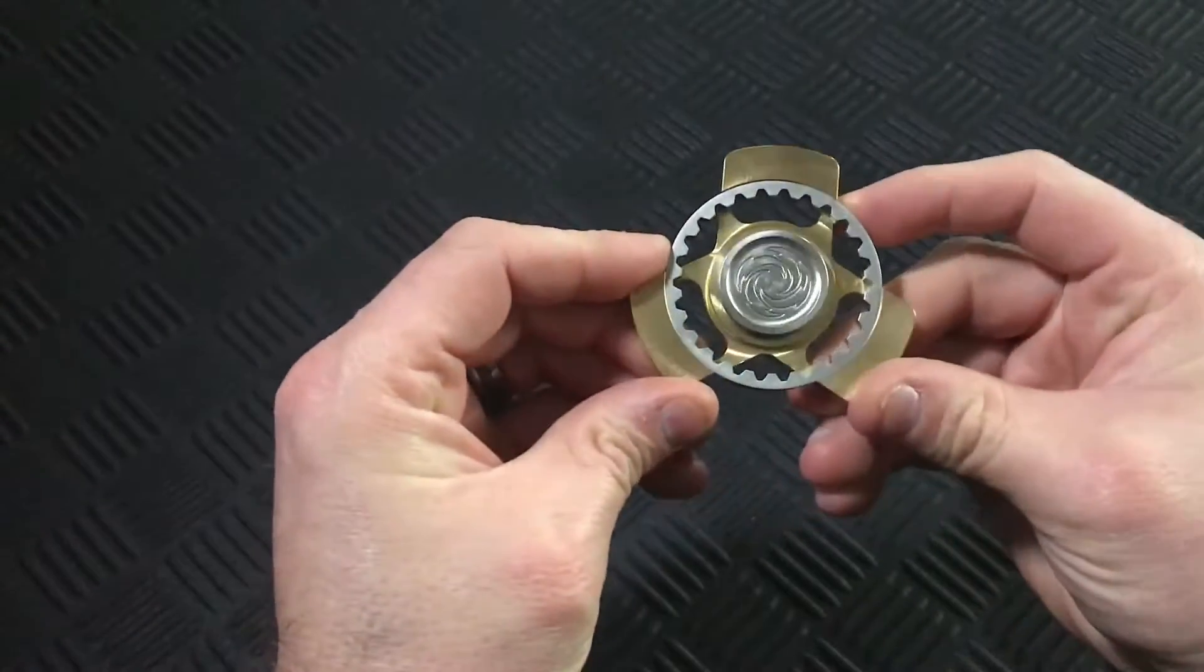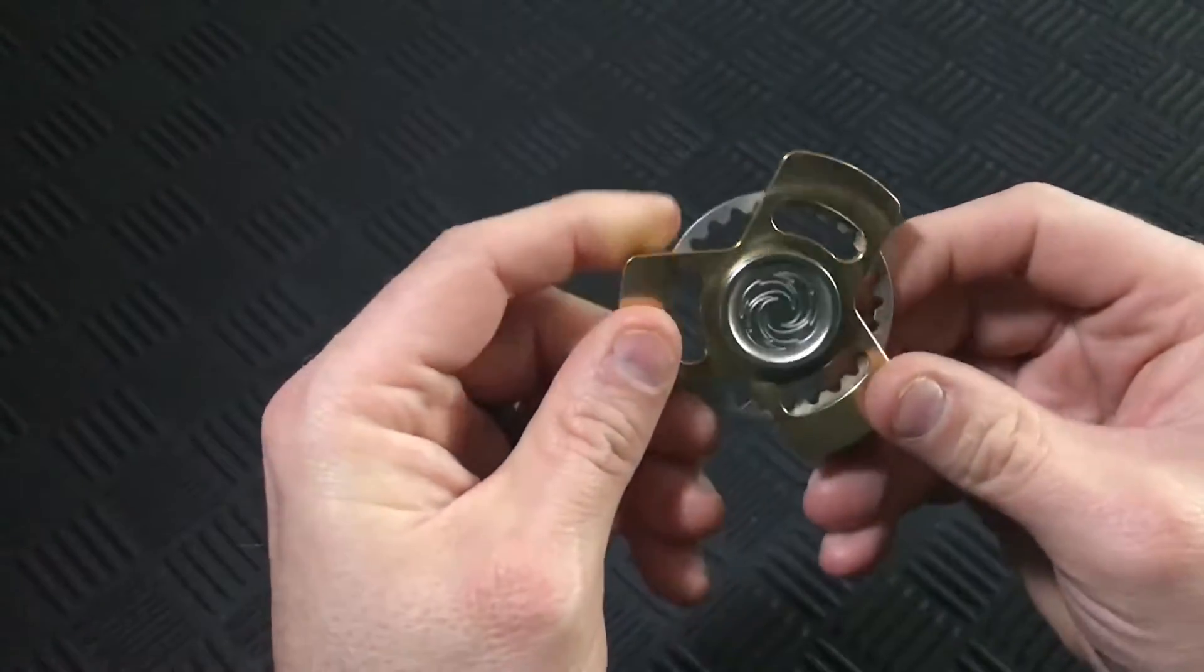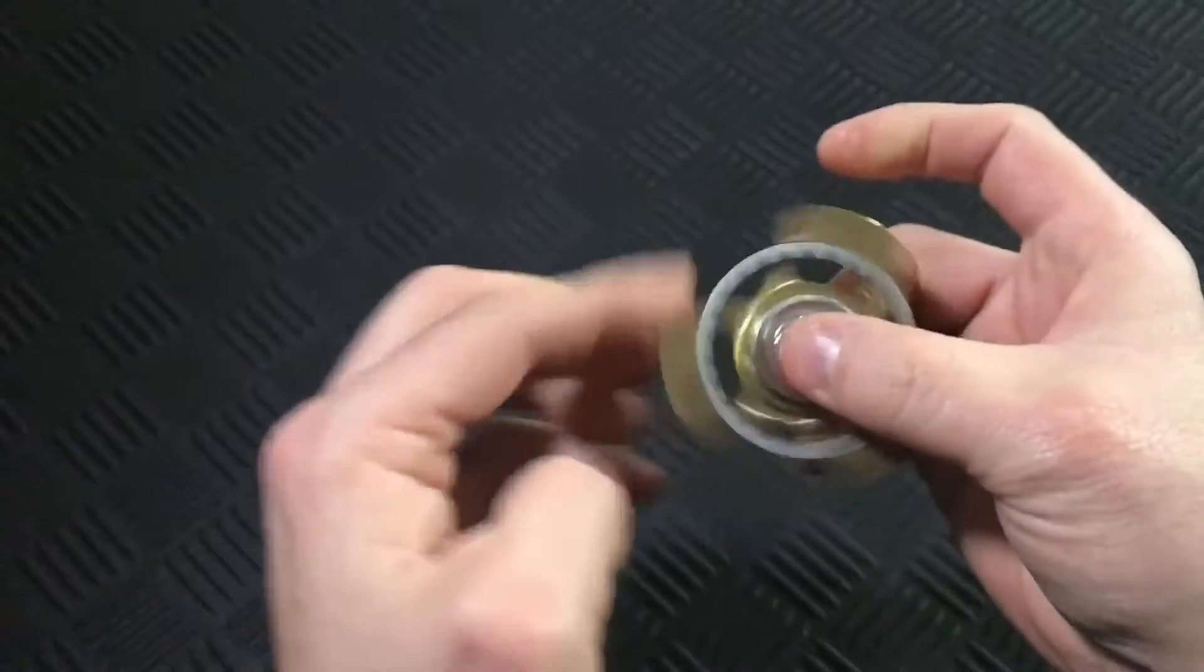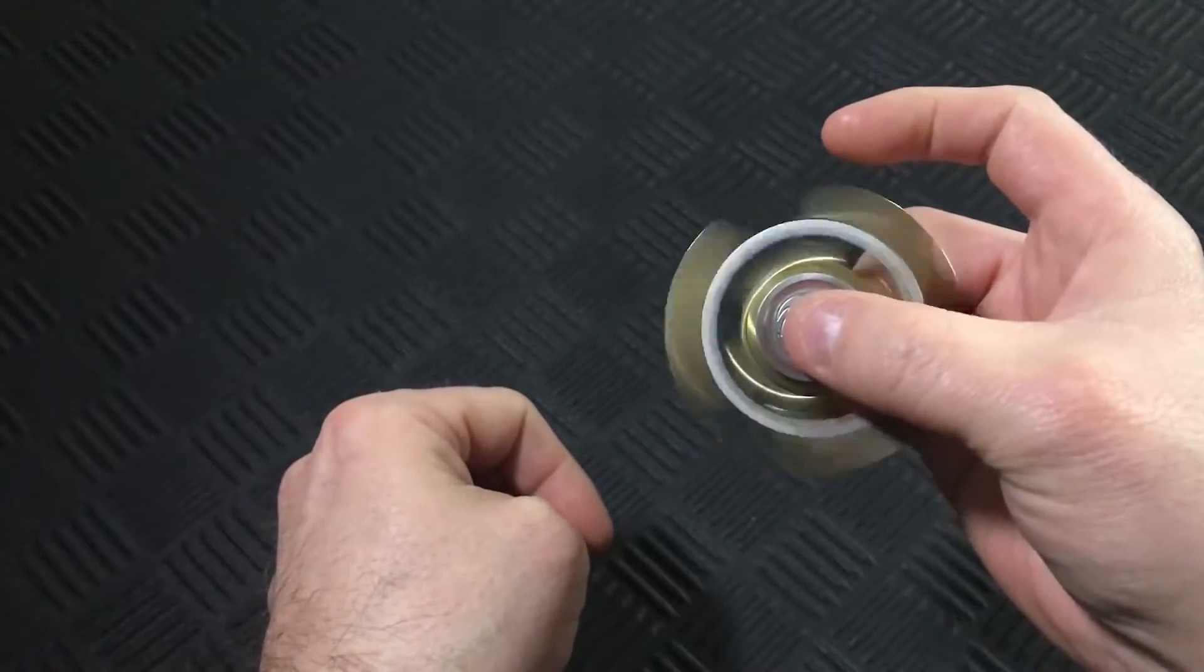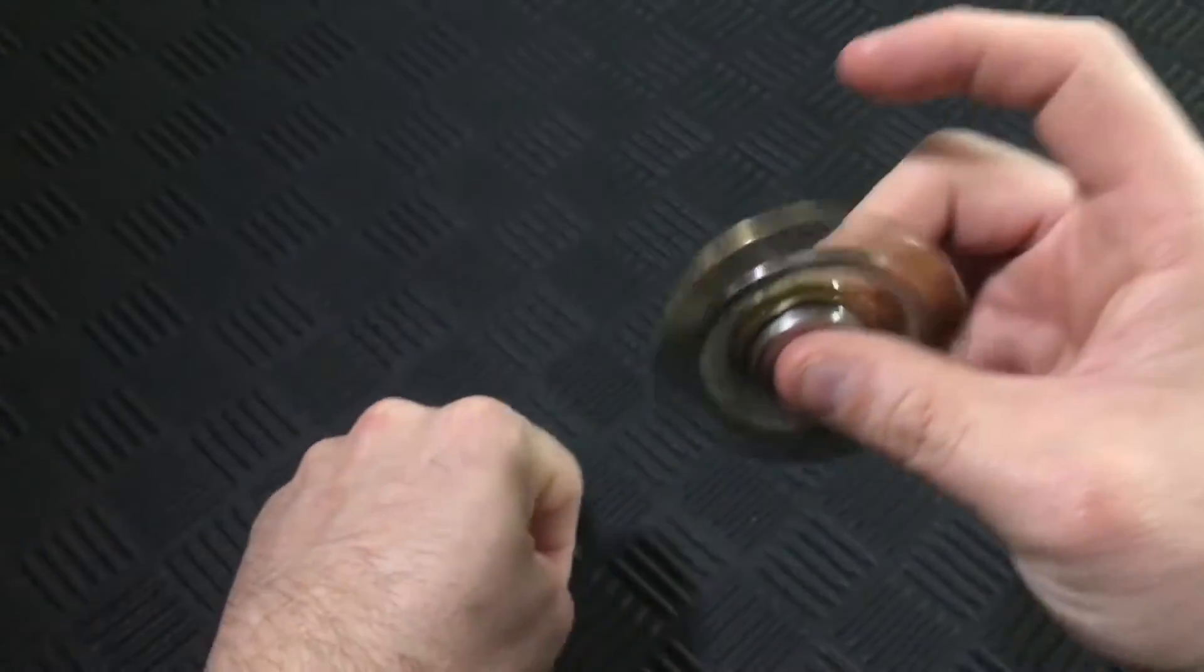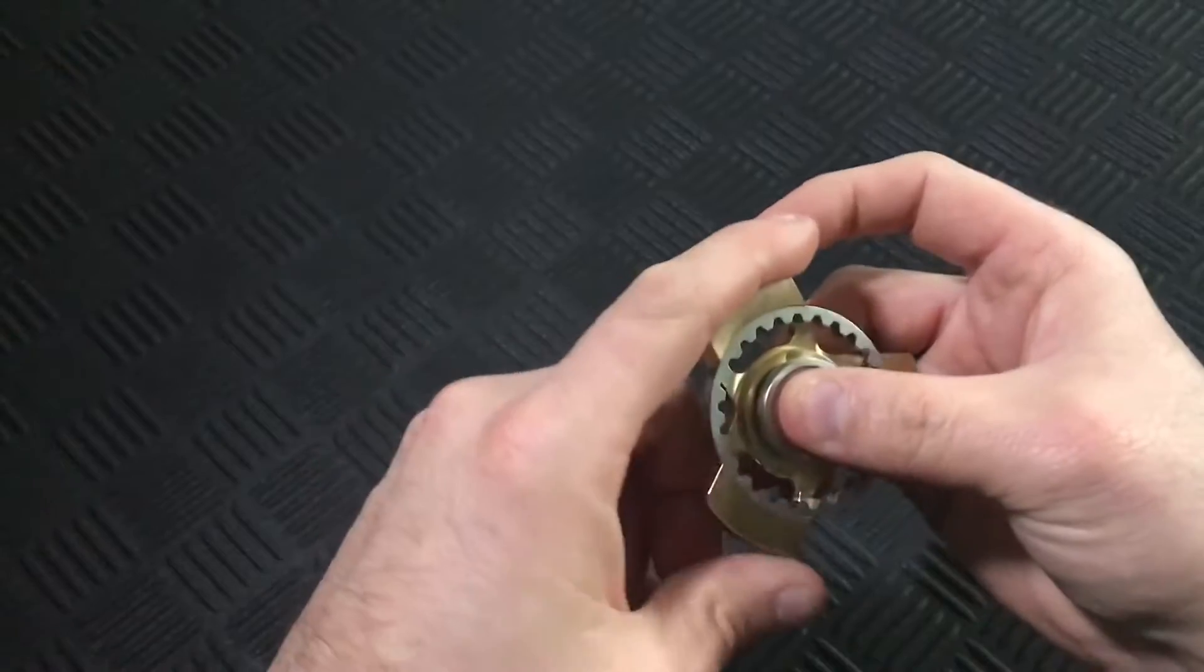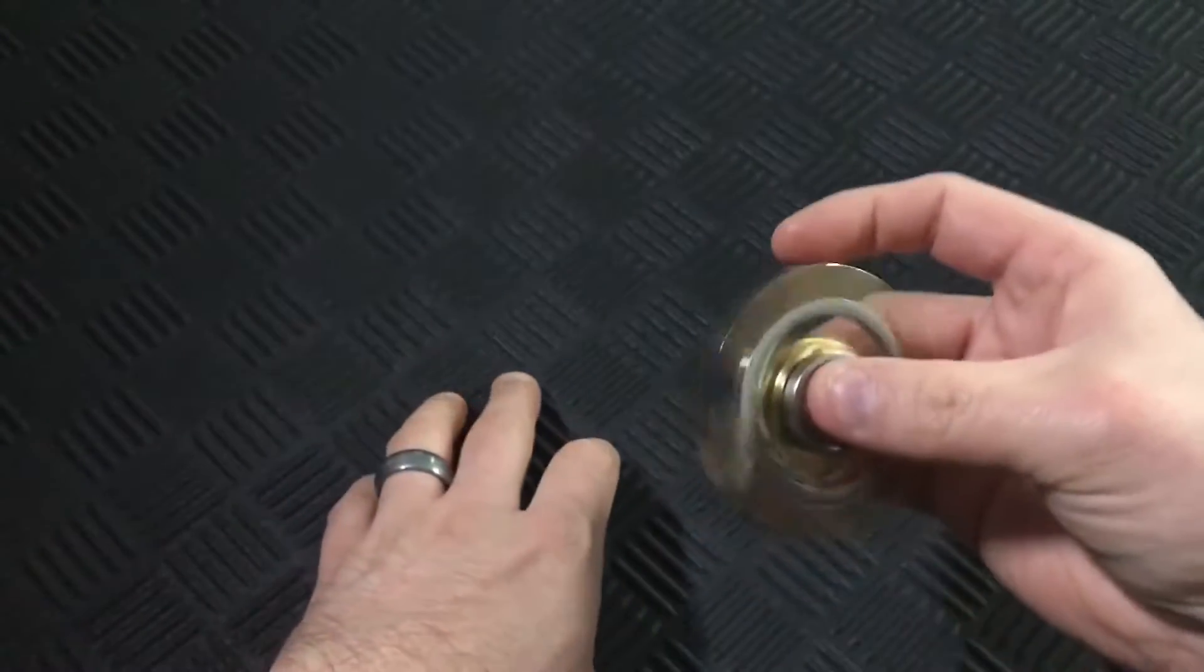First up, big shocker, we have the Maelstrom by Flyaway Toys. It has such an interesting design with the gear and this whirlwind spin effect, and that spin is very tight and solid. And thanks to that R188 bearing it does get about a six minute table spin.